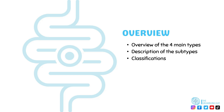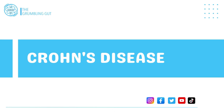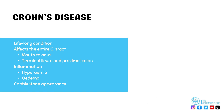Firstly, inflammatory bowel disease is the term used to describe a group of chronic and incurable inflammatory conditions that affect the digestive system. There are four different types of IBD, but most only know of the two main common forms known as Crohn's disease and ulcerative colitis. Despite there being treatment available to manage symptoms of IBD, there is however no cure.